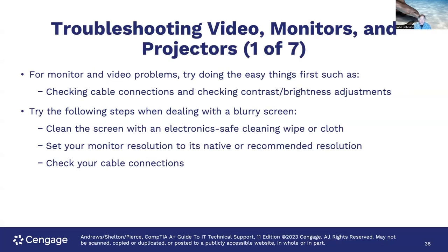When troubleshooting monitors and projectors for video problems, try the easy things first: check cable connections and check contrast and brightness adjustments. Sometimes a monitor's brightness is turned so low the user can't see the screen — adjusting it solves the problem. For a blurry screen, clean the screen with an electronics-safe cleaning wipe or cloth, set your monitor resolution to its native or recommended resolution, and check cable connections.